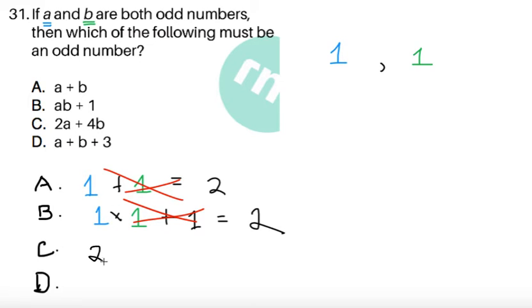Now choice C, we're going to have 2 times 1 plus 4 times 2. So it's going to give us 2 plus, sorry, not 4 times 2, 4 times 1. This gives us 2 plus 4, and that gives us 6, so it's actually wrong.